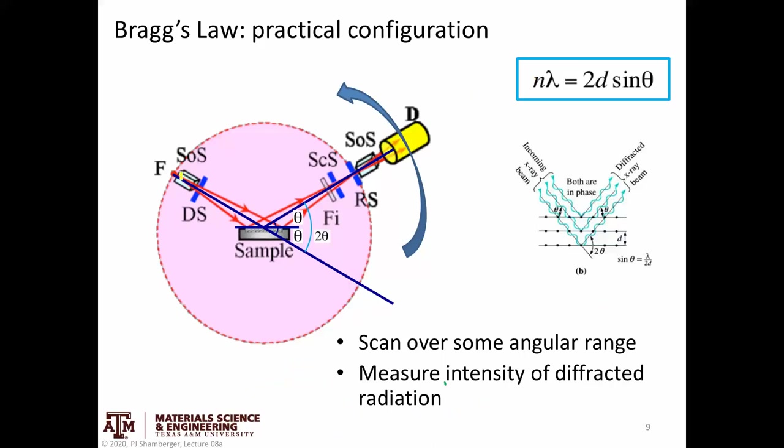Just in a practical configuration, we have a source and a beam comes in, it interrogates our sample, and it comes out. So theta is that diffraction angle. Oftentimes the detector, the angle from the detector where it would be right in line with the source, and the angle up that the detector travels is referred to as 2 theta. So oftentimes we plot intensity versus 2 theta on an x-ray diffraction spectra.